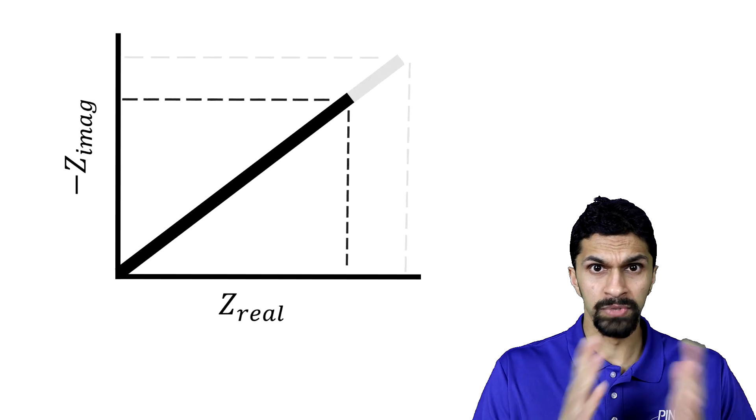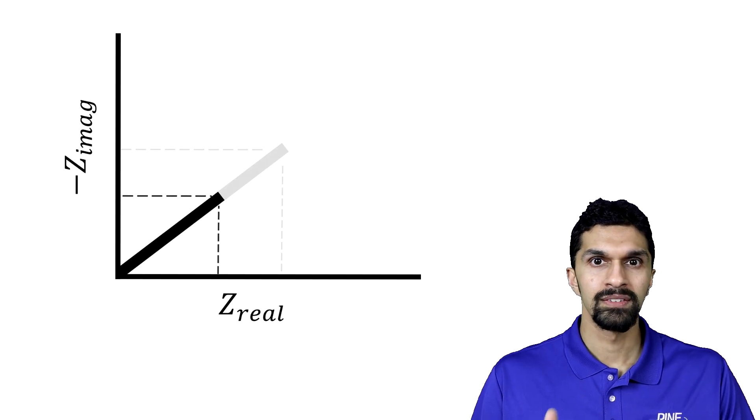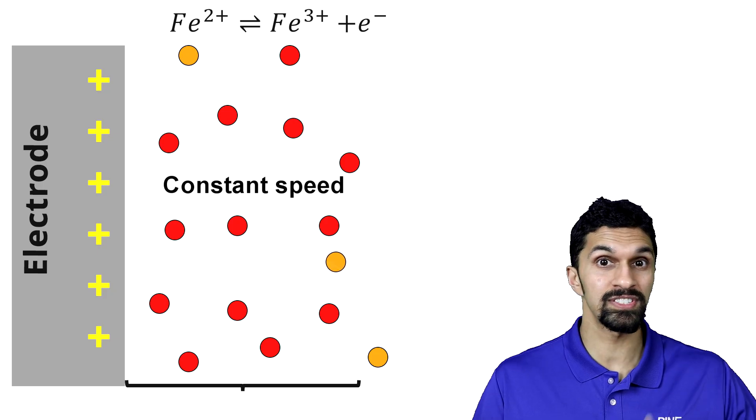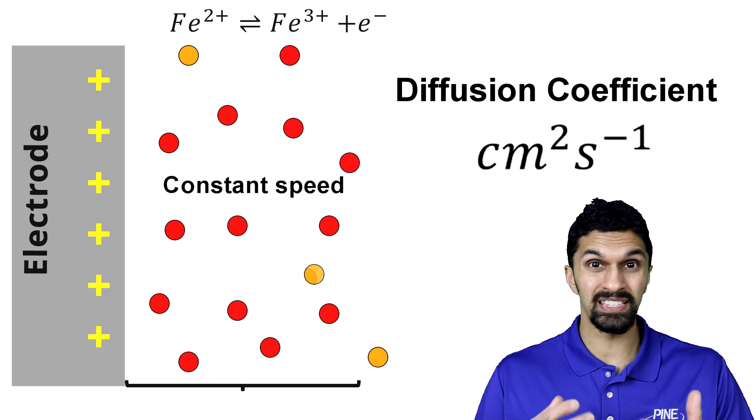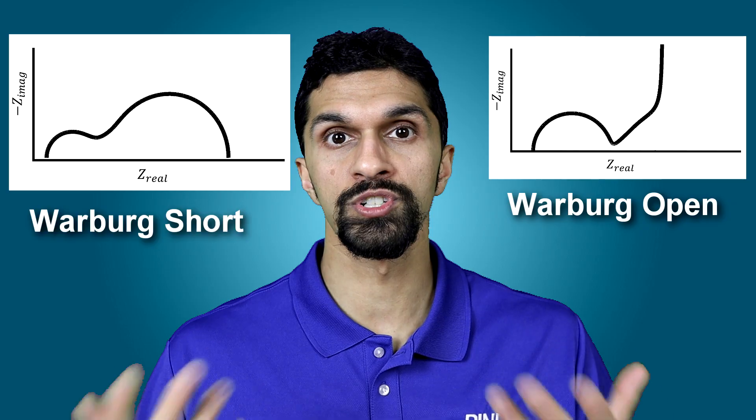If the real impedance and the imaginary impedance are increasing at the same rate, that means that the molecule has to be moving at the same speed, which we can think of as the diffusion coefficient. The diffusion coefficient has units of centimeters squared per second — that's the speed of a moving plane. When I started to think about Warburg impedance from the perspective of a molecule carrying charge through a diffusion layer, it started to make a lot more sense. Additionally, I could rationalize other forms of Warburg impedance, like a Warburg open or a Warburg short in the case of a porous membrane, especially when comparing to normal Warburg diffusion.